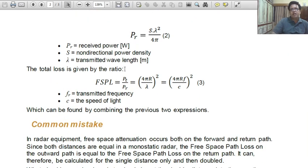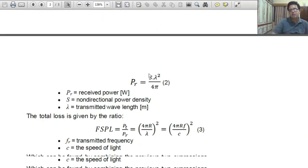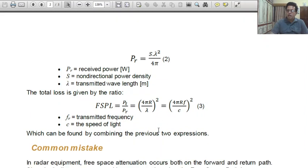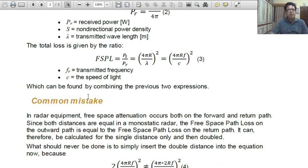The total loss is given by the ratio. So, FSPL equal to Pt upon Pr equal to 4 pi r square S upon S lambda square upon 4 pi. So it becomes 4 pi r upon lambda whole square and in terms of frequency it can be written as 4 pi rf upon c for the square where f is transmitted frequency and c is speed of light which can be found by combining the previous two expressions.